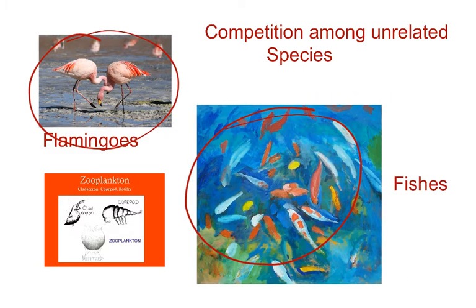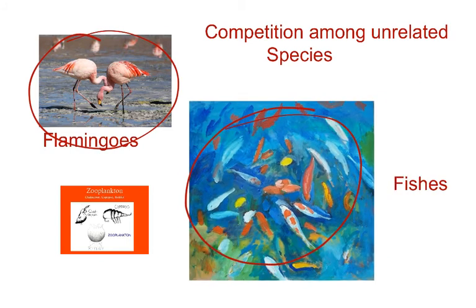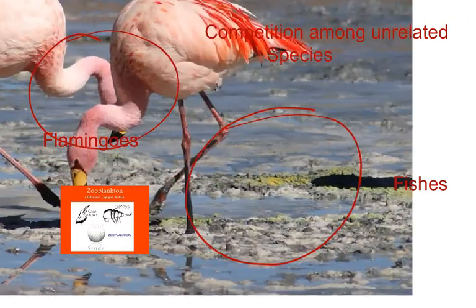Secondly, resources need not be limiting for competition to occur. In interspecific competition — interference competition — the feeding efficiency of one species might be reduced due to the interfering and inhibitory presence of another species, even when resources like food and space are abundant. Therefore, competition is best defined as a process in which the fitness of one species, measured in terms of its intrinsic rate of increase, is significantly lower in the presence of another species.